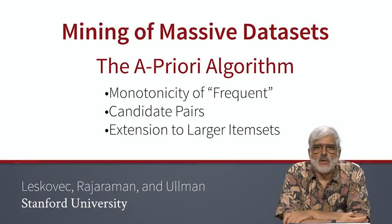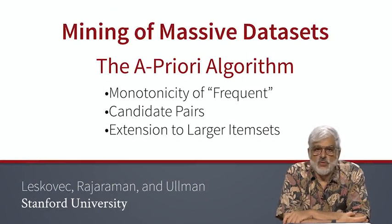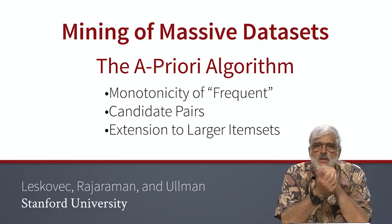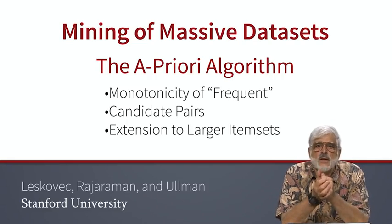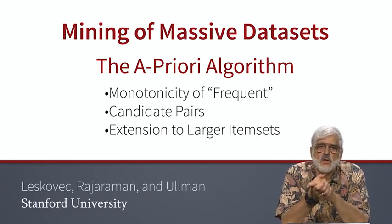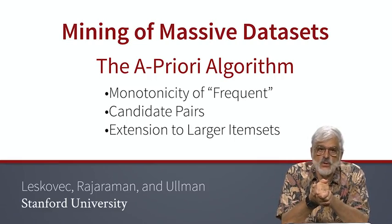We're now going to learn the basic a priori algorithm. Later we'll see some improvements to this basic idea. But the fundamental insight is monotonicity — the idea that an item set cannot be frequent unless all its subsets are frequent.